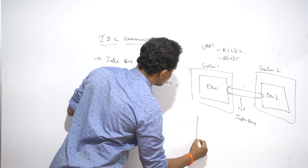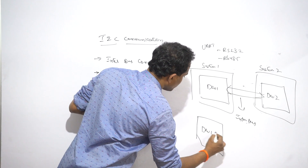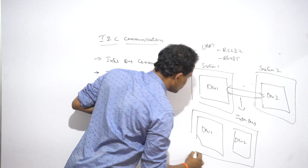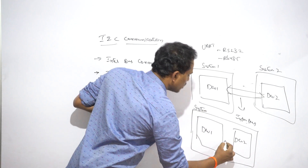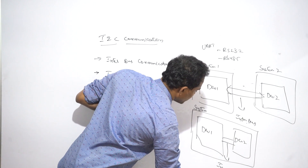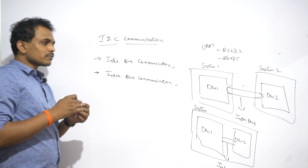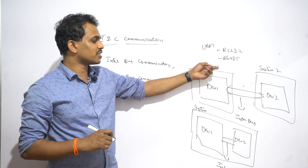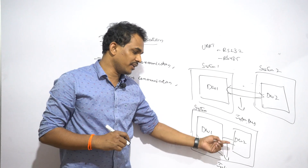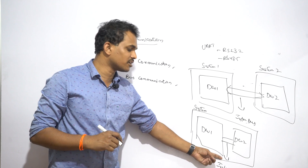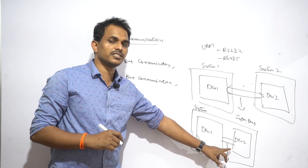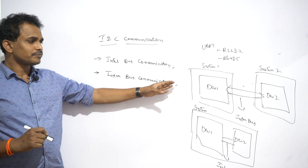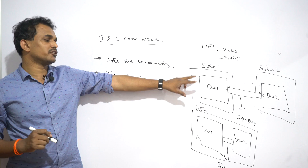How do you define the intra-bus communication system? The two devices which are present in one system — when they communicate, that bus system is treated as an intra-bus communication system. So whenever two devices present in the same system communicate, the bus is treated as an intra-bus communication system. These are the two important differences between inter-bus and intra-bus communication systems.